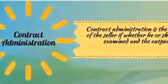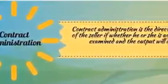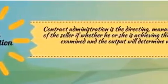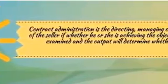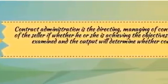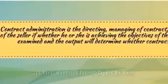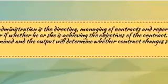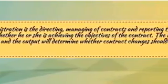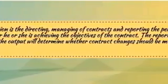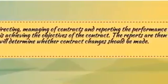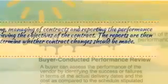Contract Administration is the directing and managing of contracts, and reporting the performance of the seller — whether he or she is achieving the objectives of the contract. The reports are then examined, and the output will determine whether contract changes should be made.